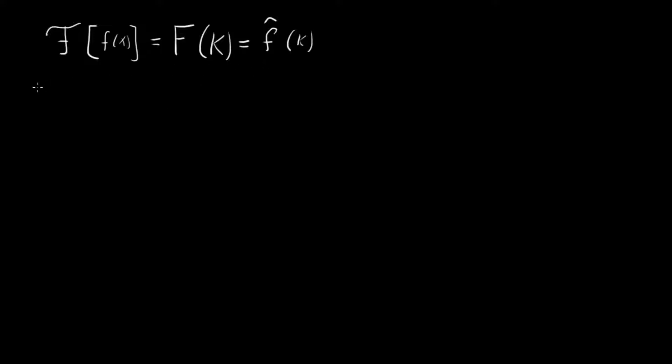So that's the forward Fourier transform. The backward Fourier transform people write in a very similar way. They write F inverse of f of k or f hat, and that just gets us back to our f of x.